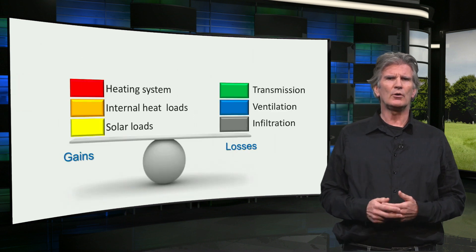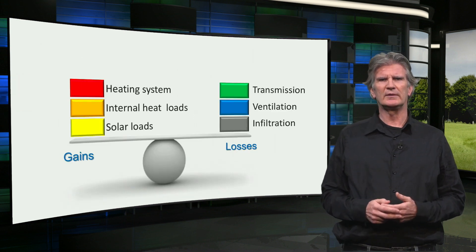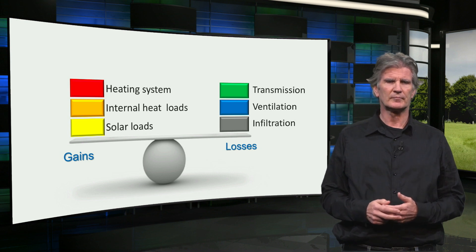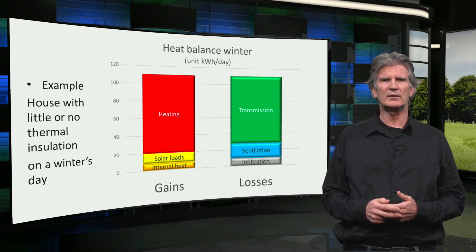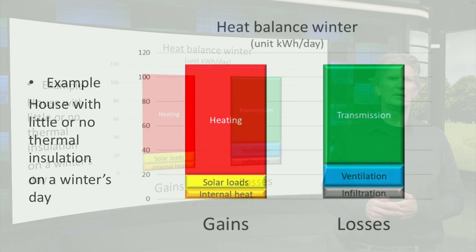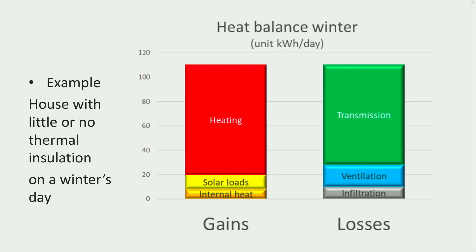Now these are all the parts of a typical heat balance in winter, with the gains on the left and the losses on the right. This is an example of a heat balance for a typical winter's day for an existing dwelling with little or no thermal insulation. As you can see, the transmission losses are the highest. On the gain side, the heating system is the most important. Note that the gains and losses should always exactly be the same.